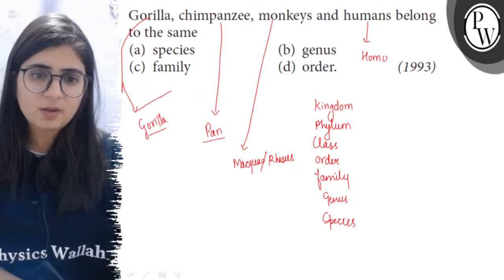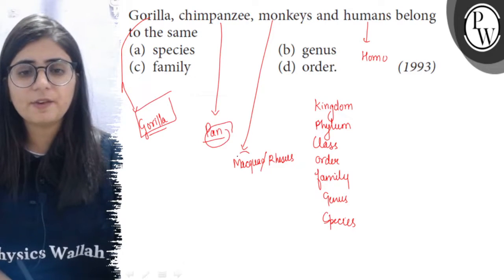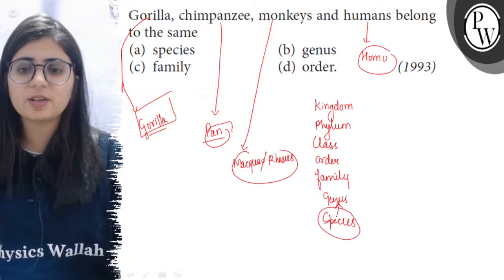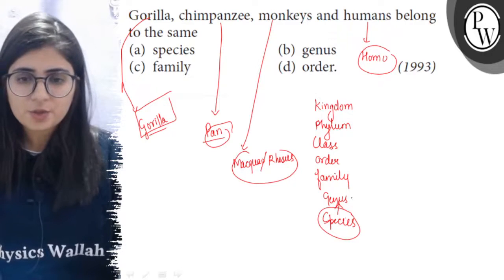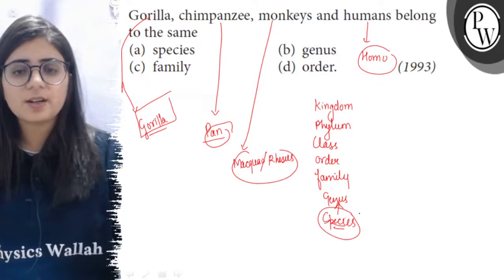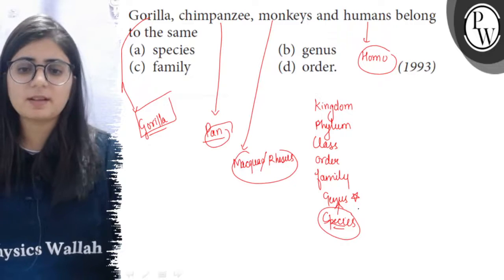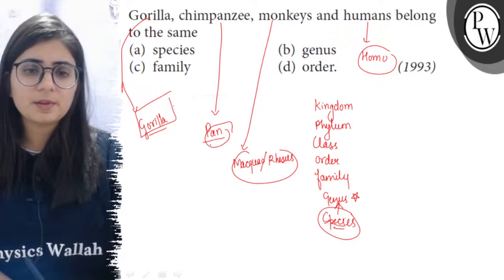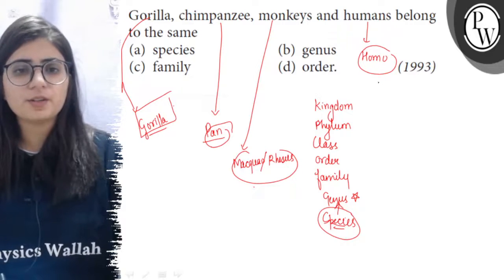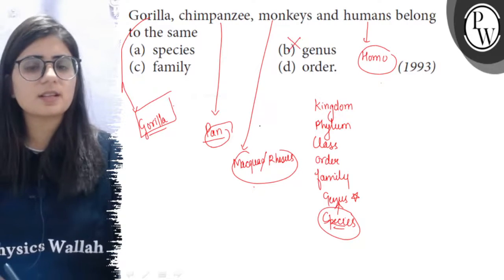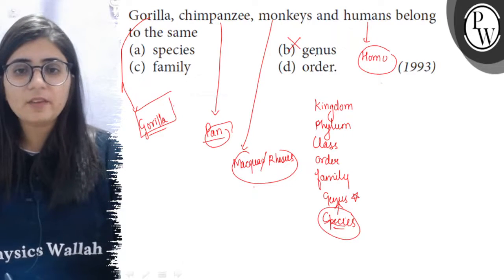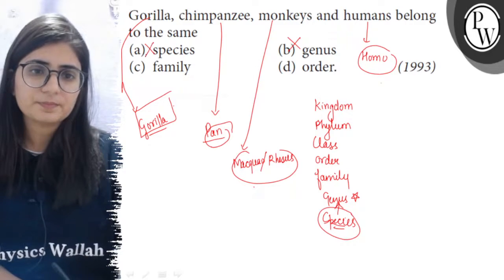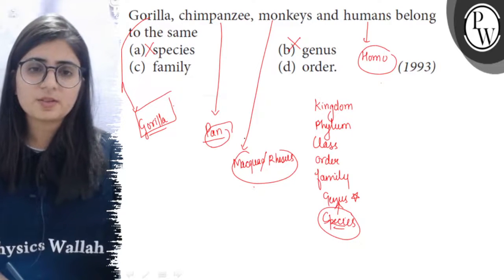We can see that all these have different genera. Genus is a group of species which share common characters. When species share common characters, they are placed under this higher taxonomic category. But all these animals belong to different genera, so genus is discarded. If they have different genera, it means their species are also different, so species is also discarded.